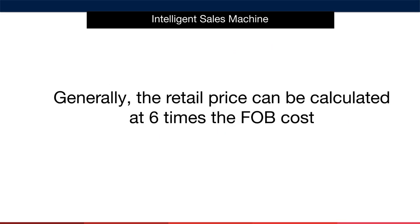We generally calculate the retail price at six times the FOB cost. We already know our sales price, as it's the price we've estimated we're going to sell for when we were ascertaining the profitability of the product in our Google spreadsheet. Now we're pretty much settled on that price. To get the list price, or what we call the retail price, you take your FOB cost, multiply it by six, and round up to the nearest $0.99 price.